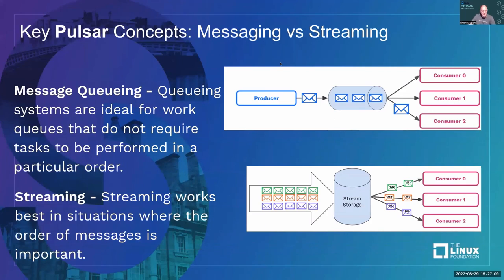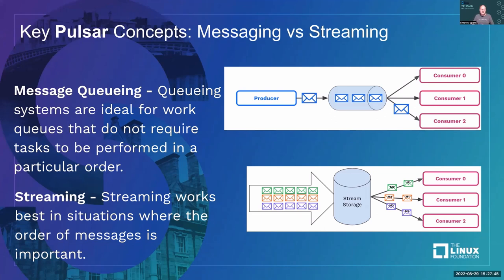We mentioned messaging and streaming — they're really similar, but not the same. In message queuing, used for work queues, you don't have to be in order: you just want things to take a message and run it. Whoever gets the next one — great. You want to scale out and get data done fast. For streaming — common in data lake, Hadoop, and IoT use cases — I want things in order, maybe from a log, time series database, IoT, or CDC from tables. At-least-once and exactly-once semantics are all handled for you.